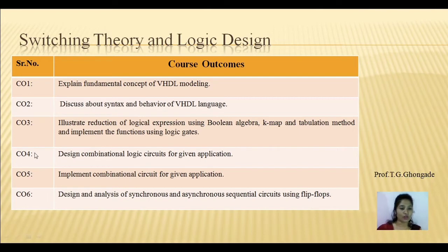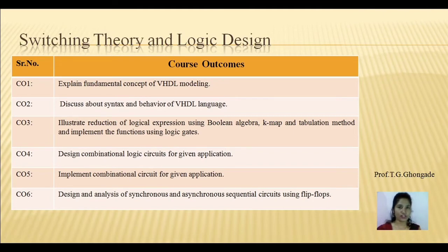Course outcome number 4 is to design combinational logic circuits for a given application. Basically, logic circuits are divided into two types: the first one is combinational logic circuit and the second one is sequential logic circuits. Combinational logic circuits are those circuits where whenever you apply an input, immediately you will get an output.